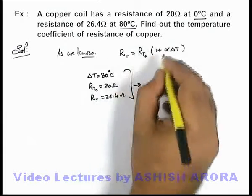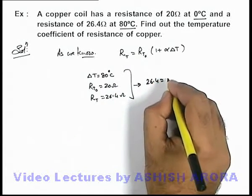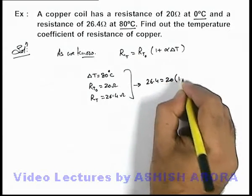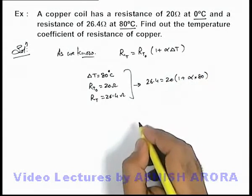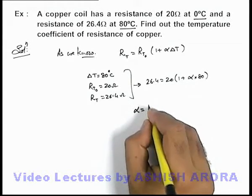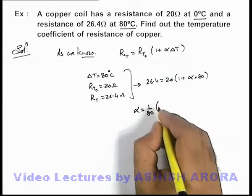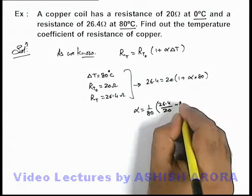Now if we substitute the values over here, we can see it is 26.4 is equal to 20 multiplied by (1 + α × 80). On simplifying this, we are getting the value of α as 1/80 multiplied by (26.4/20 - 1).